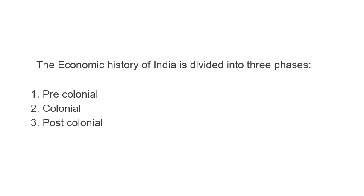When we look into the economic history of India, it is divided into three phases: the pre-colonial, colonial and post-colonial phase. In the pre-colonial phase, even before the advent of the British into India, during the Indus Valley civilization stage, India was well self-sufficient with its needs. All the villages were self-sufficient with all the goods that were required and didn't have to depend on anybody.